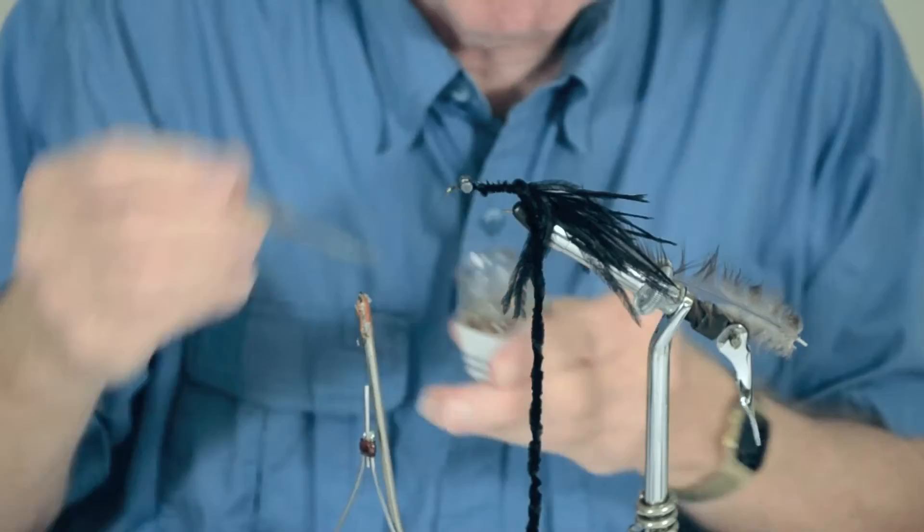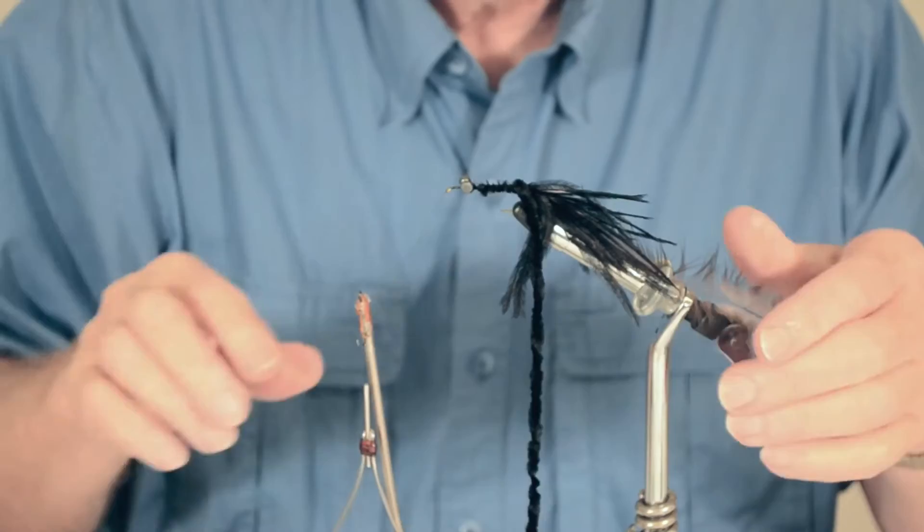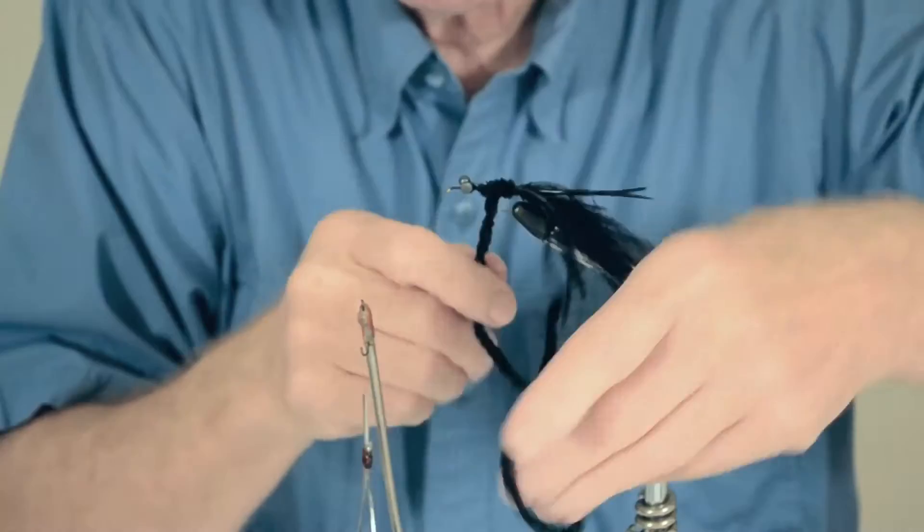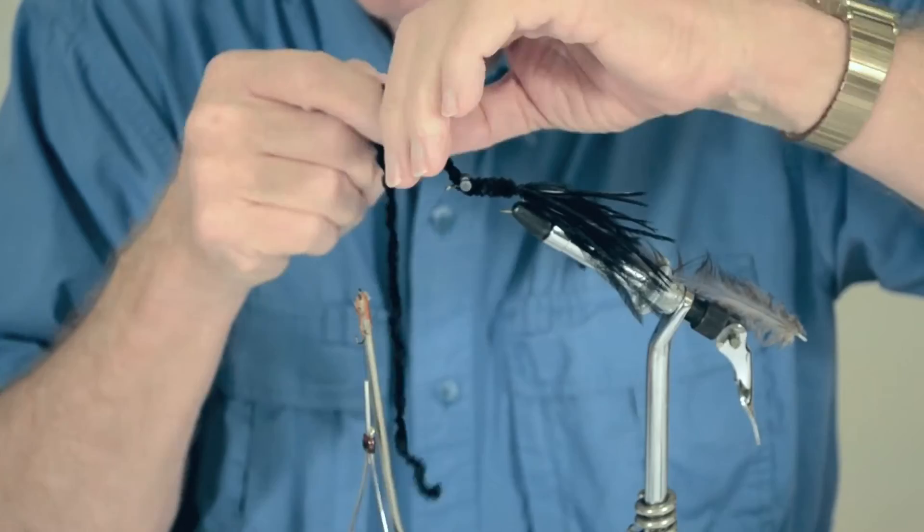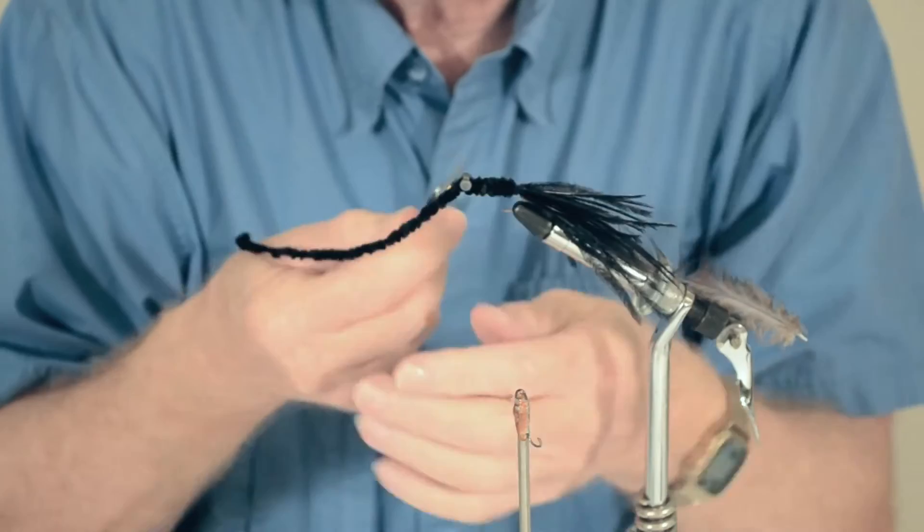A well-tied Murray's Helgrammite, there's no reason that won't stand up for a hundred or more fish. There's just nothing there that should come apart. Wind that chenille forward, one wrap immediately adjacent to the other. Up behind the eye, snugly duck under, and then come out in front of the eye with two wraps. That's what we achieve by staying back away from the eye a little bit.